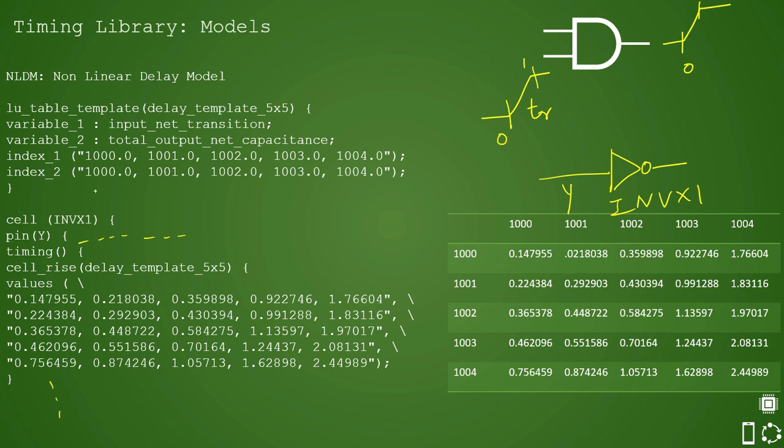Actually it would be something like this in the table, these values which are mentioned here index 1 and index 2 are mentioned here. It's the tran and it's the cap which is mentioned and for every value you can say there is a delay value mentioned. You can assume that if the tran is this and let's say cap is this so our delay value will come out to be this. So 0.70164 will be the delay value if the cap is 1003 femtofarad and input site transition is let's say 102 ps, so you will get the cell delay value of 701 ps or 0.701 nanoseconds.